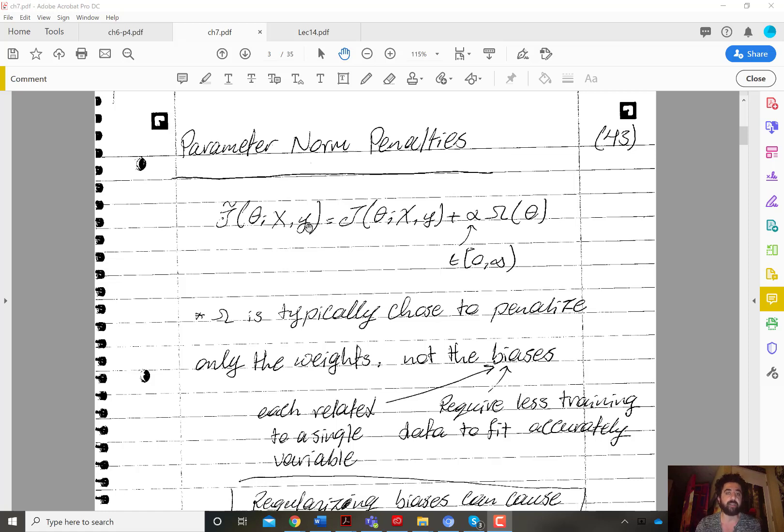the parameters and the input X and the output or training labels Y is given by the cross entropy or the maximum likelihood estimator cost plus a regularization cost which is given by alpha, a regularization coefficient, times a parameter norm regularizer omega function omega of theta.